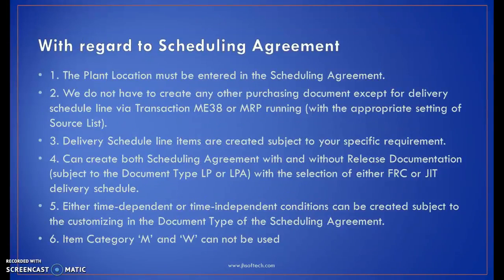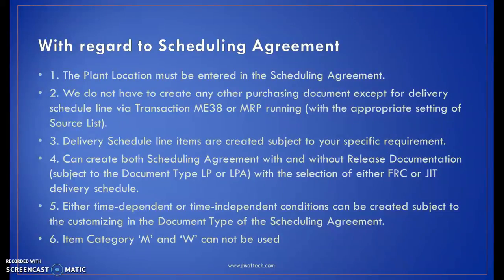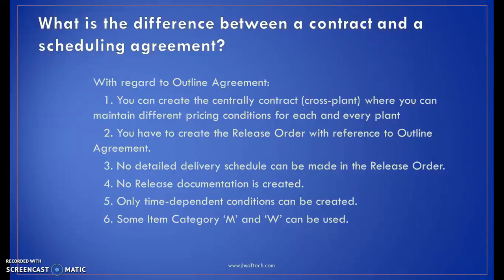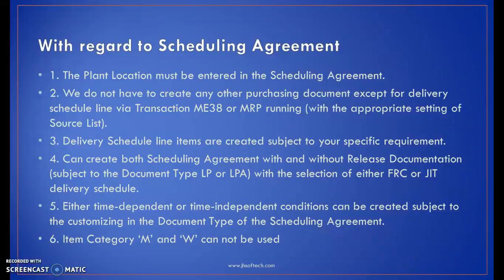For the scheduling agreement, the plant location must be entered — it is mandatory. We do not have to create any other purchasing document except for delivery schedule lines via transaction ME38 or MRP running with appropriate settings of the source list. Delivery schedule line items are created subject to your specific requirement, and you can create scheduling agreements both with and without release documentation, subject to document type LALP or LPA with selection of either FRC or JIT delivery schedule. Either time-dependent or time-independent conditions can be created subject to customizing in the document type. Item categories M and W cannot be used in a scheduling agreement.